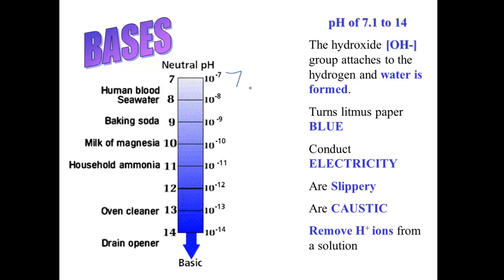Bases go from a pH of about 7.1 all the way to 14. The higher the pH, the more basic or alkaline you are.